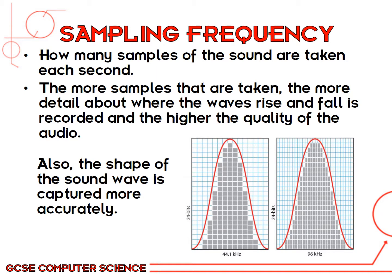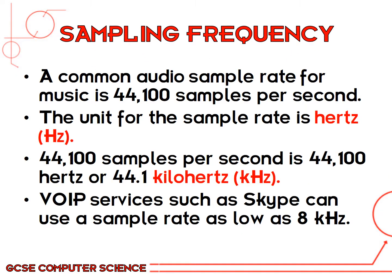Sampling frequency is how many samples of the sound are taken each second. The more samples taken, the more detail about where the sound waves rise and fall is recorded, and the higher the quality of the audio — the shape of the sound wave is captured more accurately. You can see on the picture where the blocks rise to meet the red analog line, and with a higher sampling frequency the red line is touched almost all the way around. The unit of measurement is hertz. A common audio sample rate for music — such as MP3 files — is 44,100 samples per second, or 44.1 kilohertz.